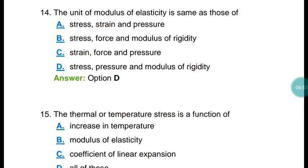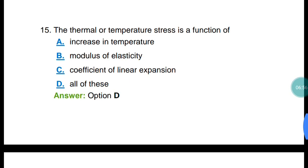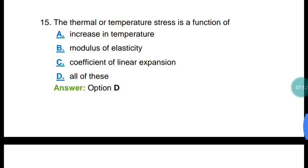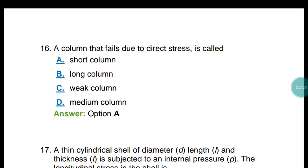Question number fifteen: Thermal or temperature stress is a function of all three — increase in temperature, modulus of elasticity, and coefficient of linear expansion. The formula is alpha × T × E, where alpha is the coefficient of thermal expansion, T is the temperature increase, and E is the modulus of elasticity. Question number sixteen: A column that fails due to direct stress is called a short column — option A.